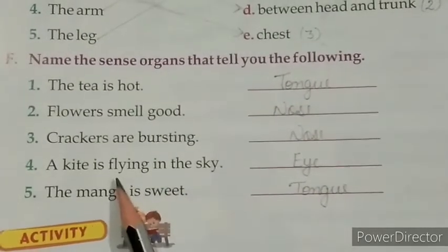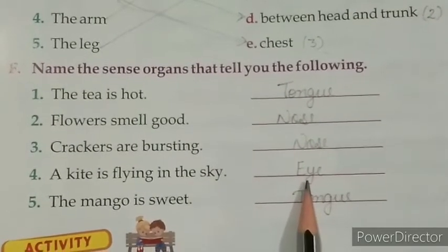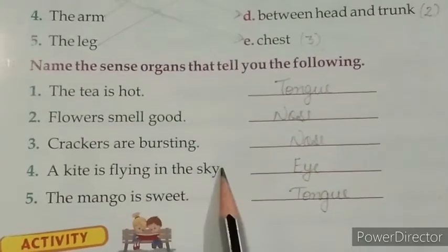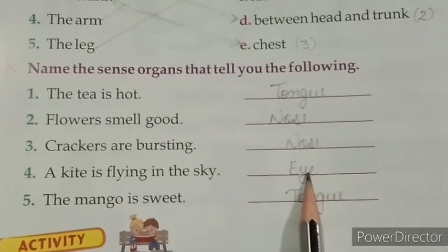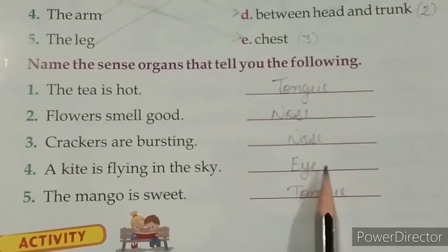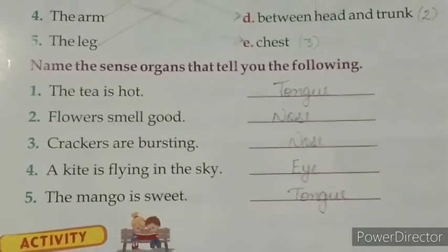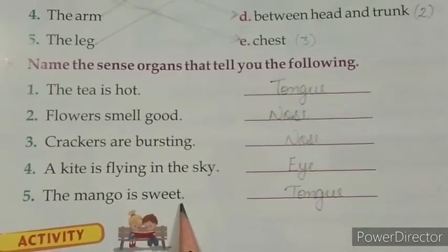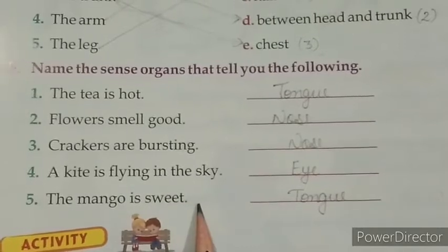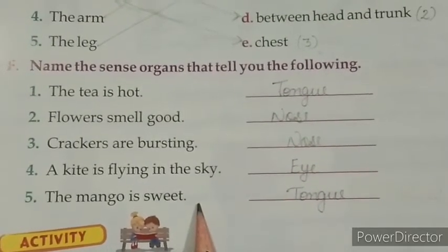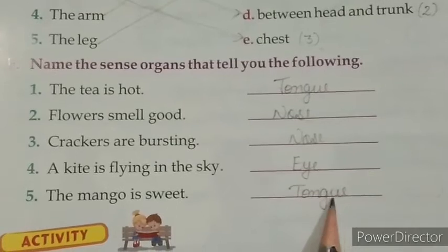Fourth one: a kite is flying in the sky. The answer is eye — E-Y-E — because with the help of eyes we can see anything. Fifth one: the mango is sweet. The answer is tongue — T-O-N-G-U-E.